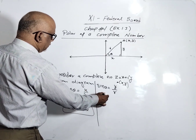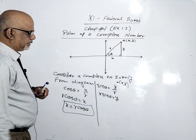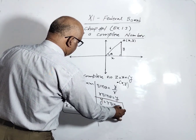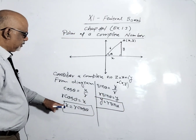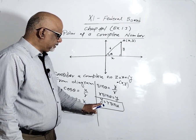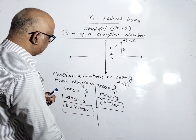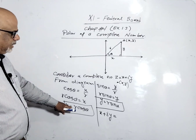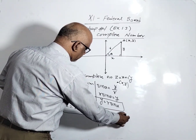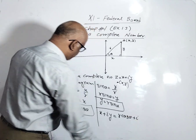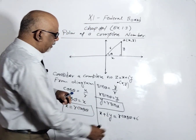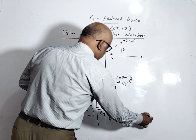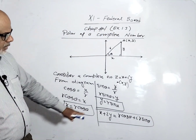So y = r sin θ. This gives us the value of x as r cos θ and the value of y as r sin θ. Therefore, x + iy equals r cos θ + i r sin θ. This is called the polar form.